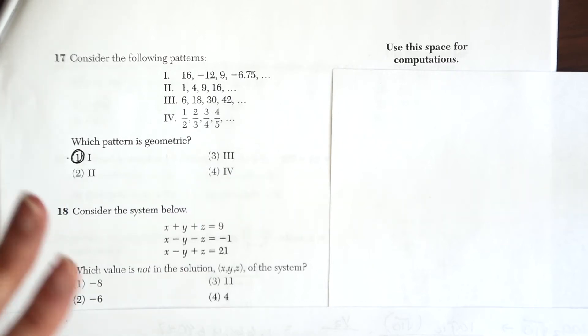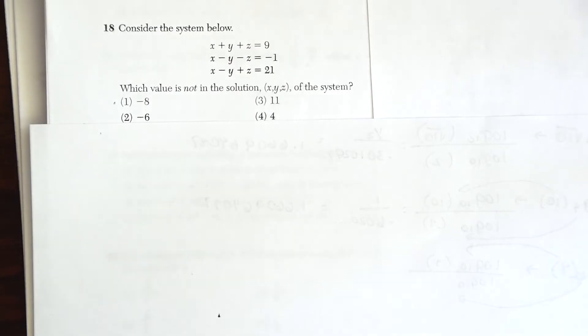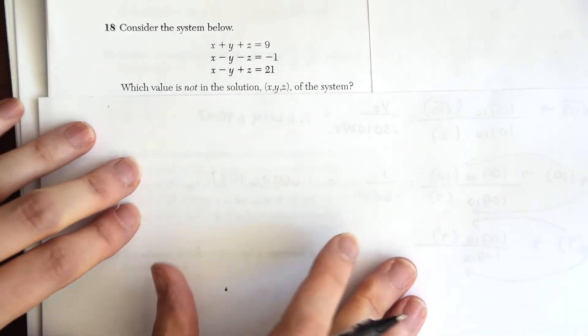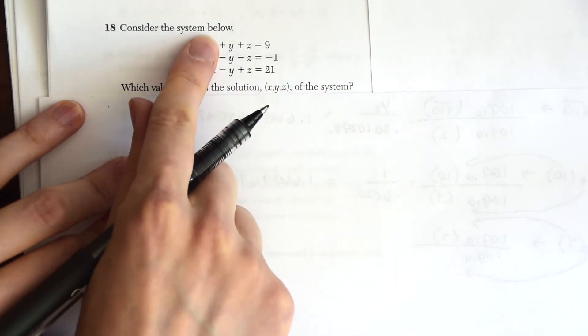Consider the system below. And we have three terms and we're going to need to solve for each one. And it says, which value is not in the solution (x, y, z) of the system? So we're going to need to solve for x, y, and z to find the answer to this question. So in order to do that, let's write them all. Let's take the first two.